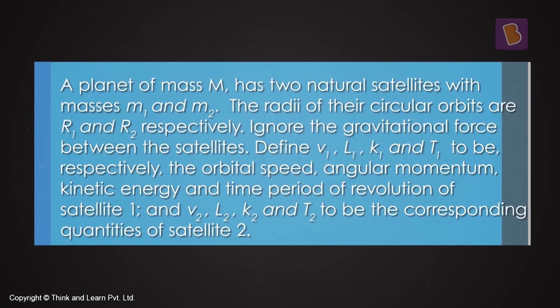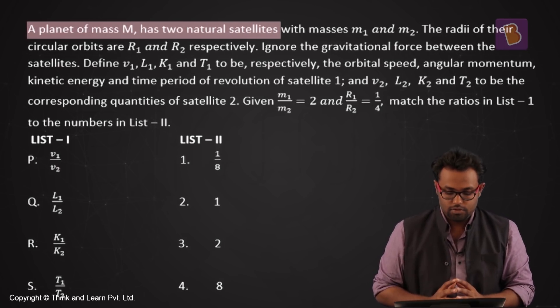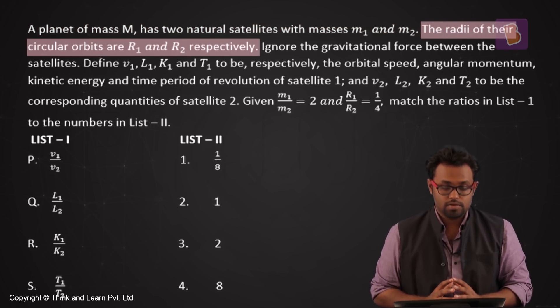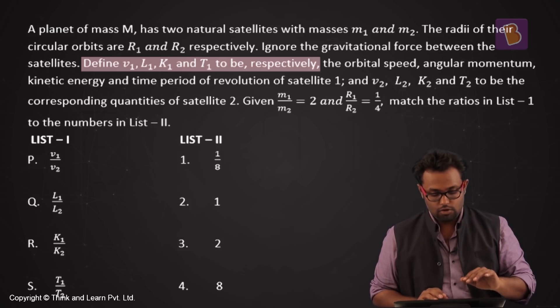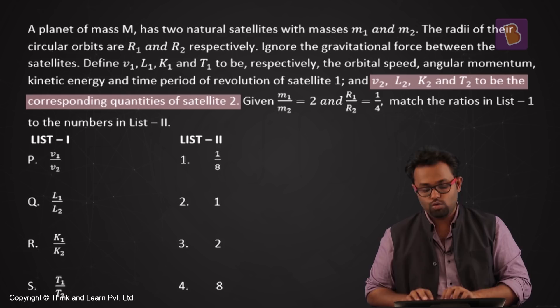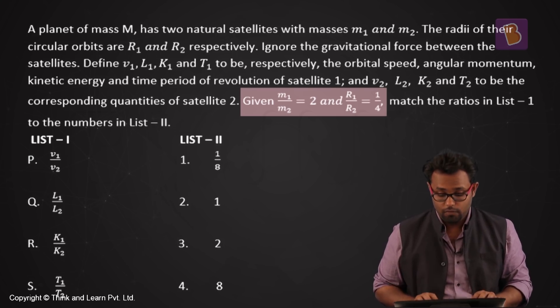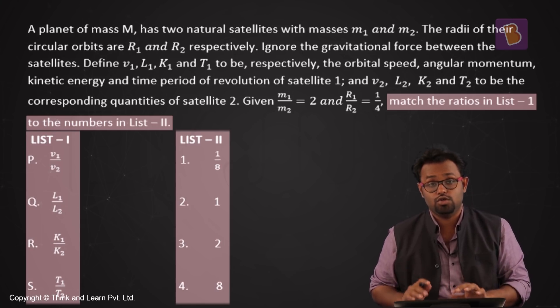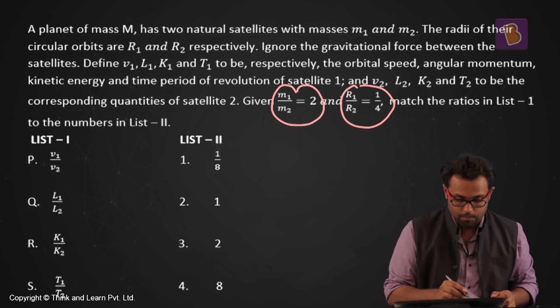Let's look at another problem from mechanics. A planet of mass M has two natural satellites with masses m1 and m2, with circular orbit radii r1 and r2. Define v1, L1, k1, T1 for satellite 1 and v2, L2, k2, T2 for satellite 2. Given m1/m2 = 2 and r1/r2 = 1/4, match the ratios in list 1 to numbers in list 2.